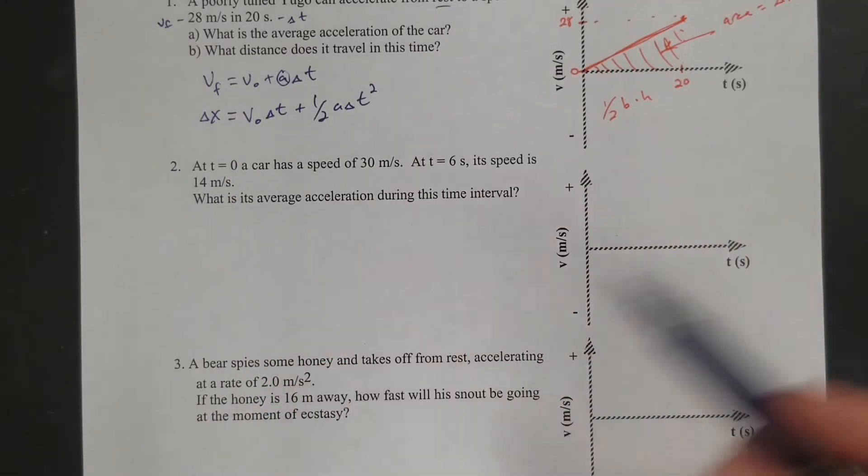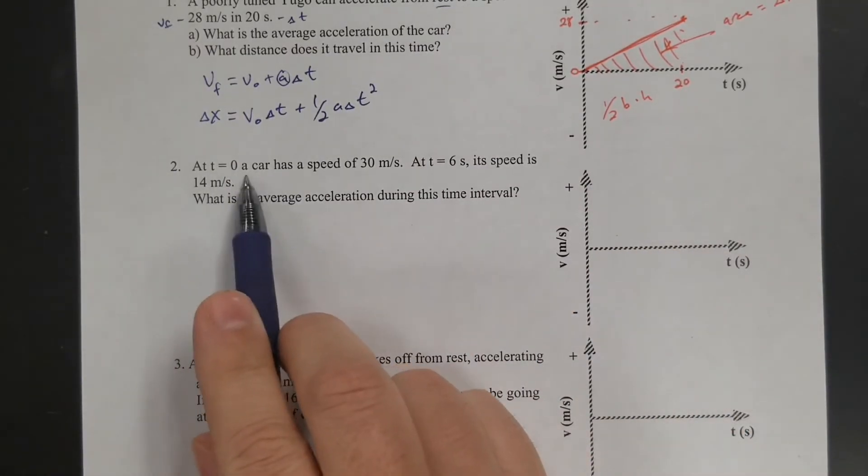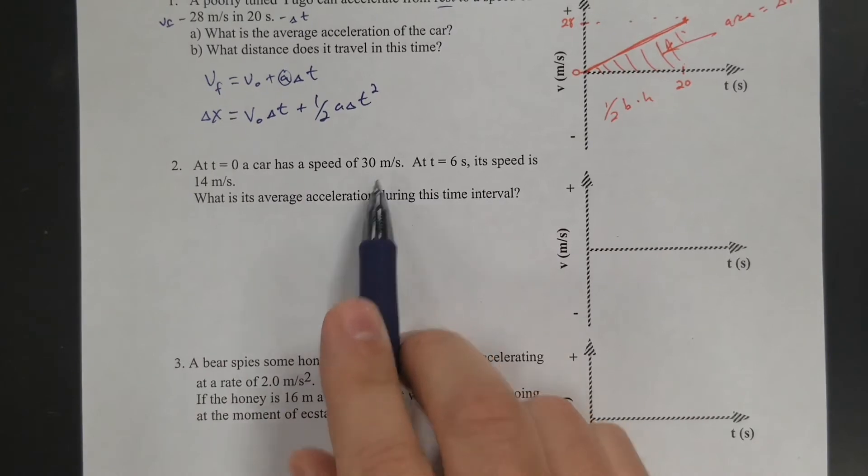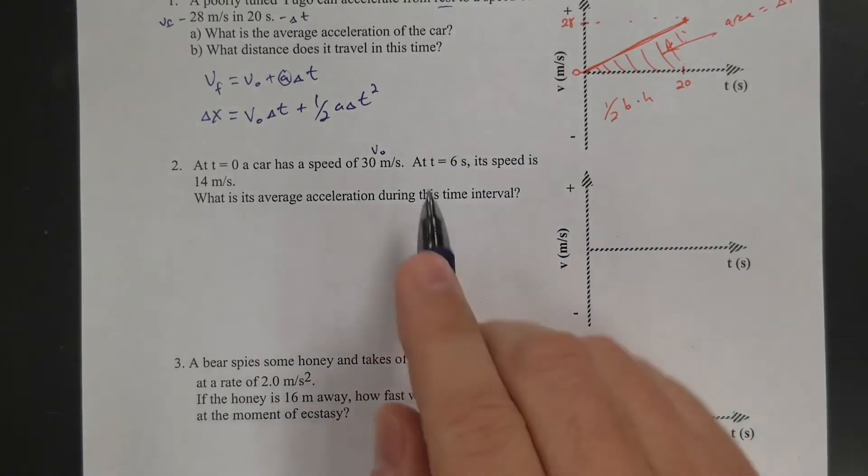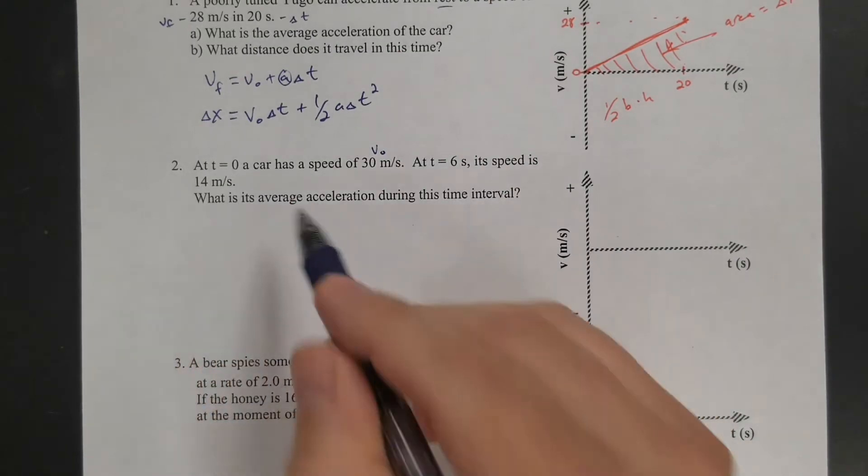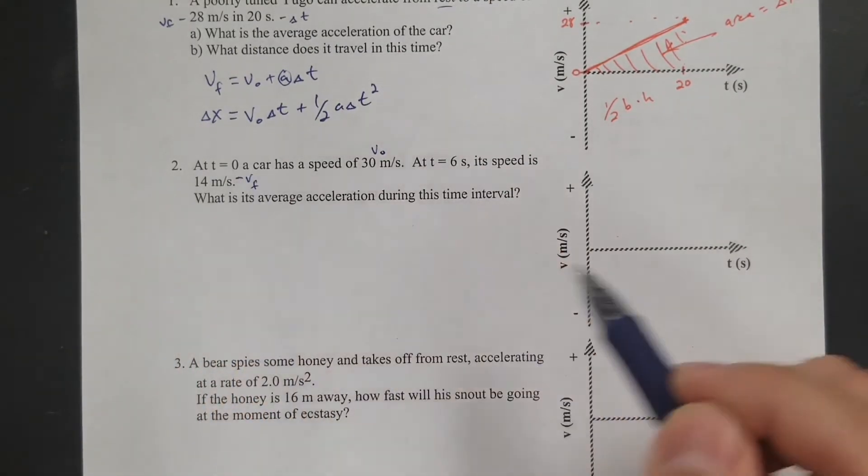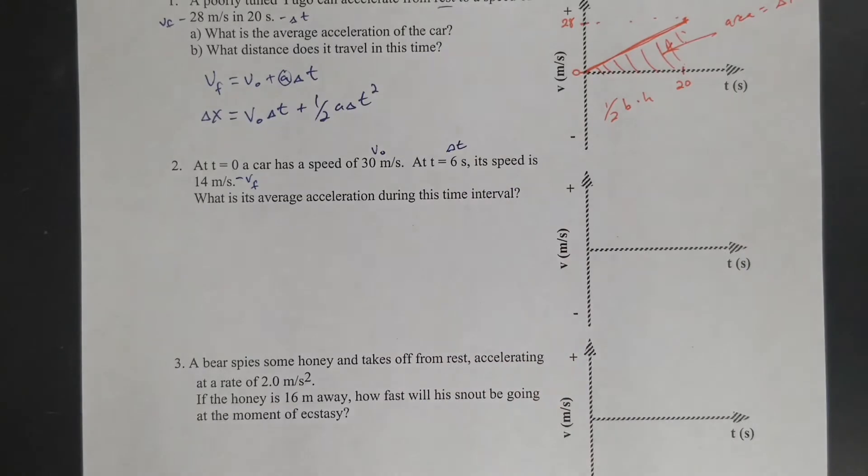So the second one is a little bit easier. There's only one part. So t equals 0, a car has a speed of 30 meters per second. So right there, that tells me this is initial velocity. At 6 seconds, its speed is 14 meters per second. So that means that's final, and that's my time interval.